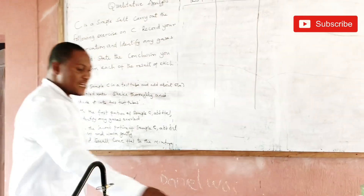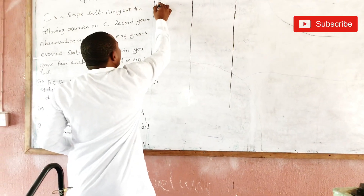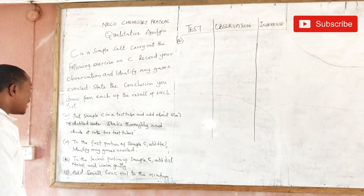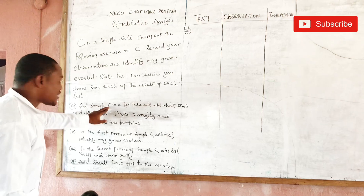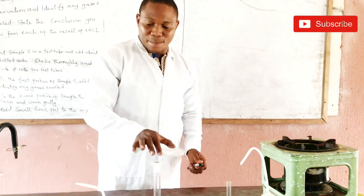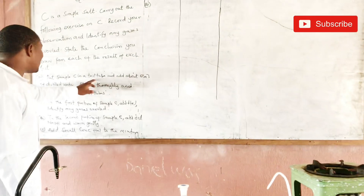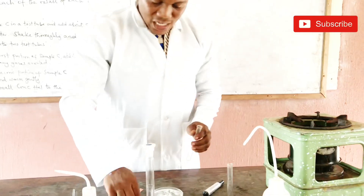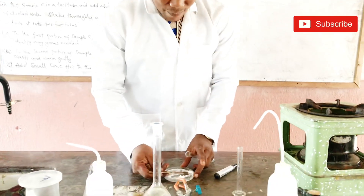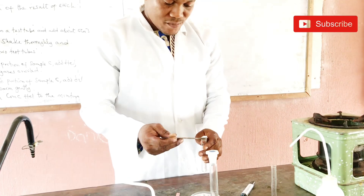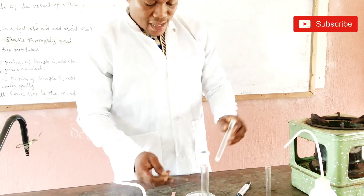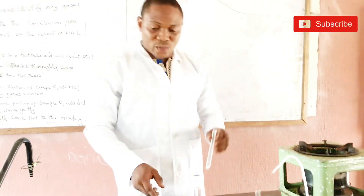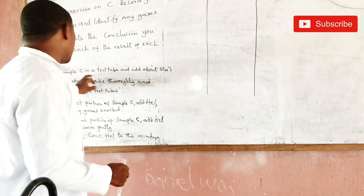The first one is part (a). Very important — number it the way they have numbered it in the question. Put sample C in a test tube. This will be labelled sample C. So the instruction says: put sample C in a test tube and add about five centimetres cubed of distilled water. With the end of my spatula, I'll take my sample C and put it into my test tube.